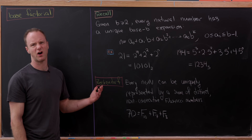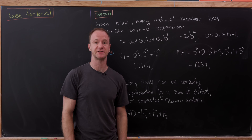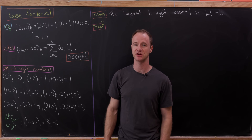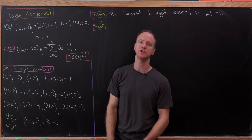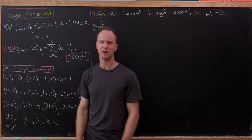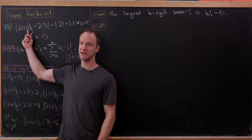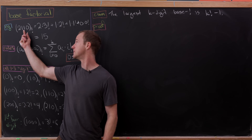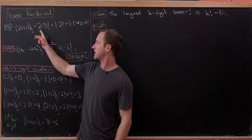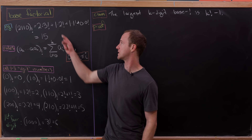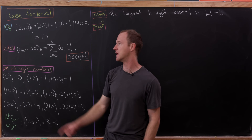Now that we've recalled the background, let's talk about our real idea here, which is base factorial. Let's start by dipping our toes in by looking at the number 2110 base factorial. The place value here is a multiple of whatever factorial you're at. The furthest right digit is a multiple of 0 factorial, the next is a multiple of 1 factorial, then 2 factorial, then 3 factorial. So this number expands to 2 times 3 factorial plus 1 times 2 factorial plus 1 times 1 factorial plus 0 times 0 factorial, and adding all that up gives the number 15.